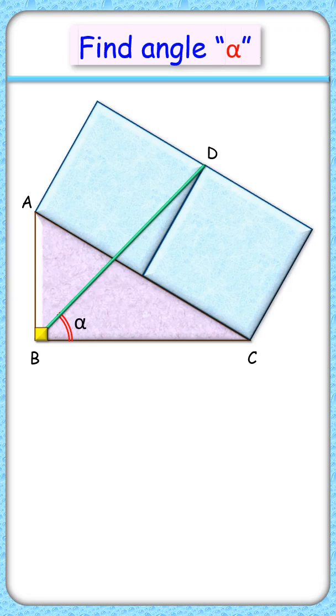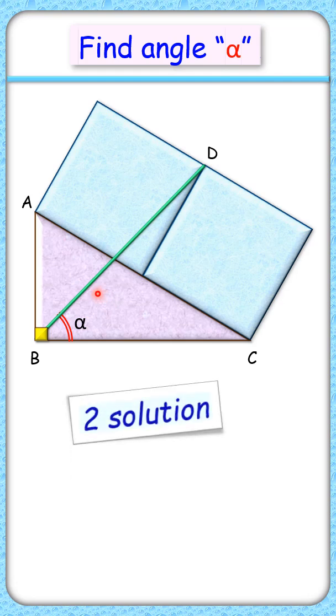This interesting question involves a right-angle triangle with two squares on its hypotenuse. The exciting part is that with this limited data we have to find the value of angle alpha. For the same question we'll discuss two solutions.